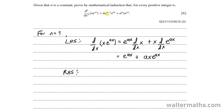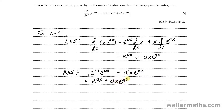On the right hand side, if n is equal to 1, we'll have 1 of a to the power of 1 minus 1 of e to the ax, plus a to the power of 1 of x e to the power of ax. This simplifies to: 1 minus 1 is 0, so a to the power of 0 is 1, so we have e to the power of ax remaining, plus a of x e to the ax. This is equal to the left hand side, and therefore the formula is true for n is equal to 1.